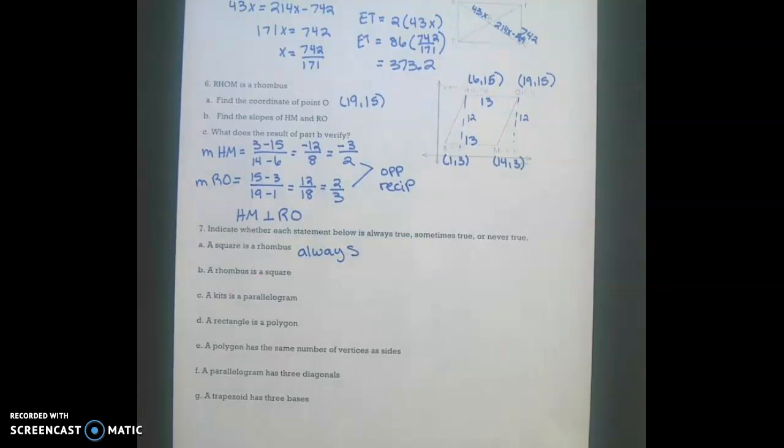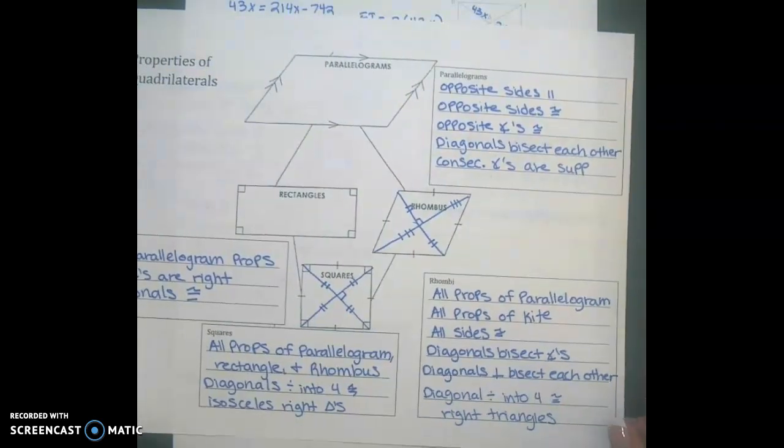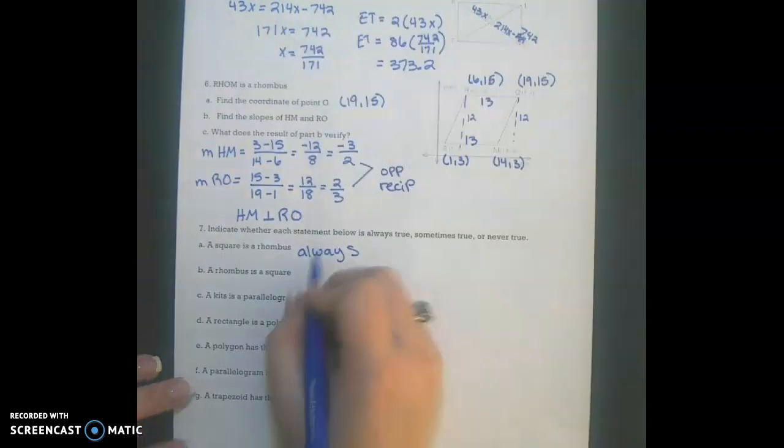A rhombus is a square. Now a rhombus can also be a square, but it's not guaranteed. So this is going to be a sometimes.